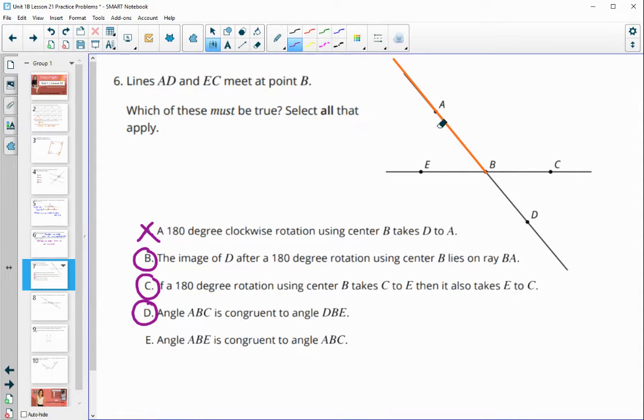And then angle ABE is congruent to angle ABC. So are those two angles congruent? And that is not true necessarily.